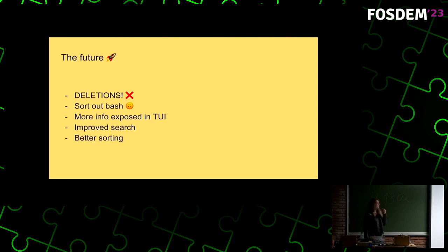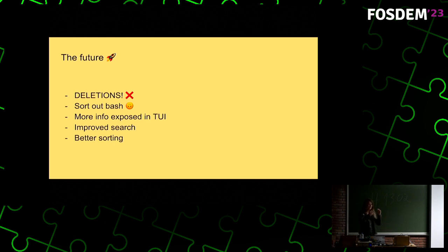In terms of the future, right now Atuin has a bit of a flaw in that you can't actually delete history once it's been synced. This is mostly because the sync is pretty eventually consistent, and every machine you have is a potential writer. So ensuring that you delete something and it stays deleted is actually really difficult. I've currently got a solution that works on my laptop — I just need to make sure it works on everyone else's too.